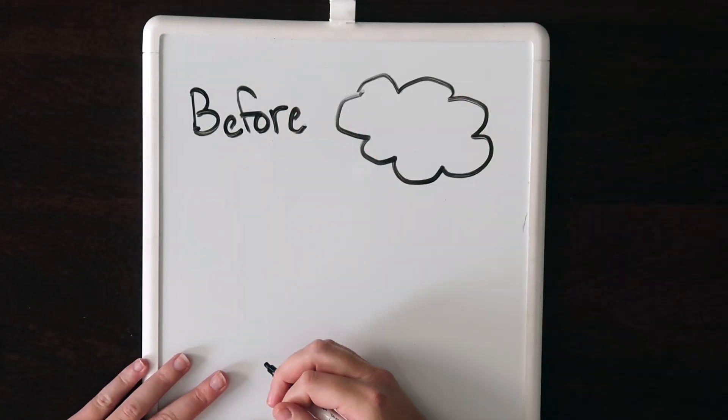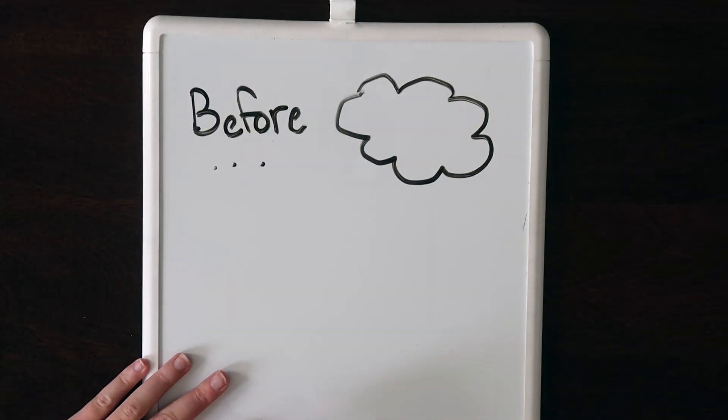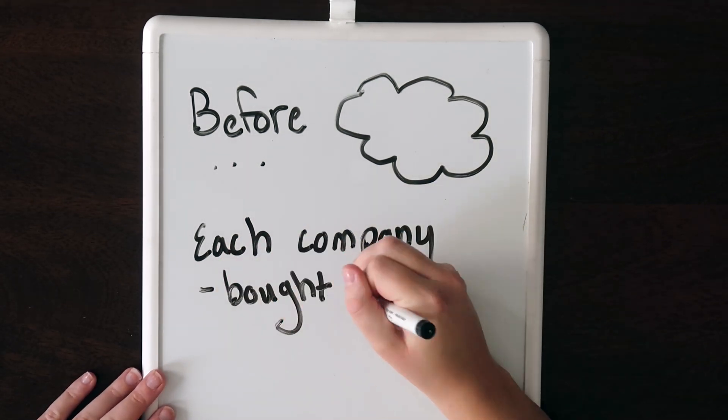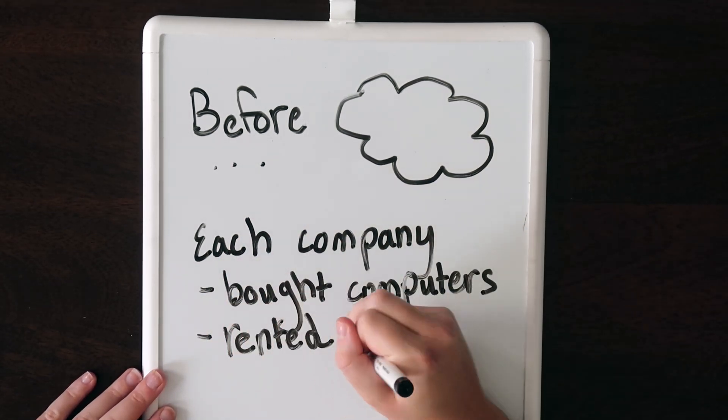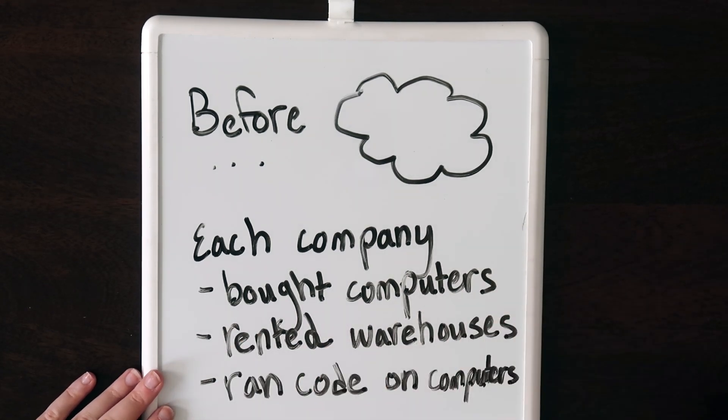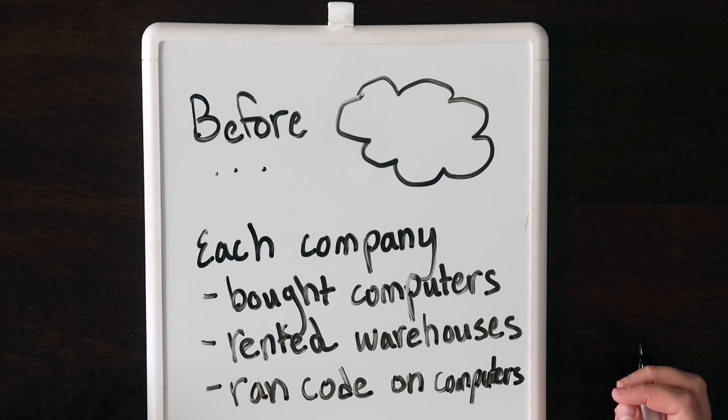So before the cloud, most software companies hosted their own infrastructure. What that means is they bought their own computers, rented a warehouse, and used them to run their code 24-7, so their products and software applications were always available for their customers. The introduction of the cloud really has to do with who manages these computers, or as they're often called, servers, since they're serving code to customers.